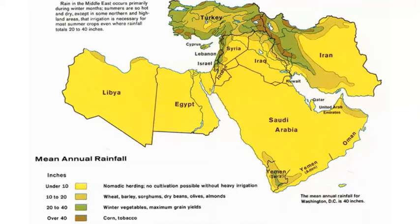Of course, all this temperature and precipitation data relates to agriculture, which then relates to population density and where people live. We can see a map showing different rainfall levels alongside the type of vegetation or domesticated agriculture found in each area. Much of it is desert, where we find nomadic herding. In some places with enough precipitation — a semi-arid steppe, similar to the Great Plains — we could grow wheat, barley, and grains. In other areas with enough moisture, we can grow corn and tobacco, similar to the American Midwest or Southeast.